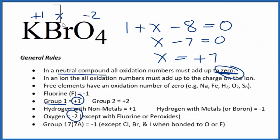So the oxidation number on the bromine here in KBrO4 is going to be plus 7. If we add all these up, 4 times minus 2, that's minus 8, plus 7, that's minus 1, plus 1, that gives us 0.